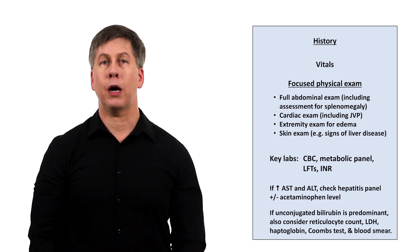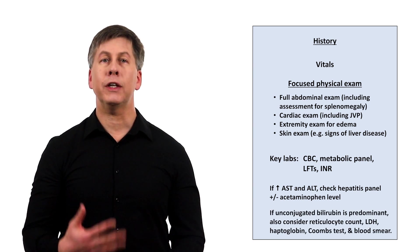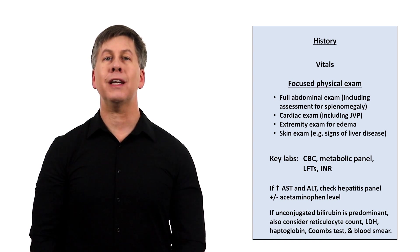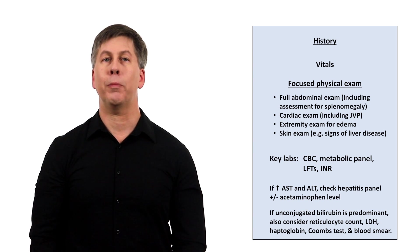If unconjugated bilirubin is predominant, also consider a reticulocyte count, LDH, haptoglobin, Coombs test, and blood smear, particularly if the history is not consistent with Gilbert.